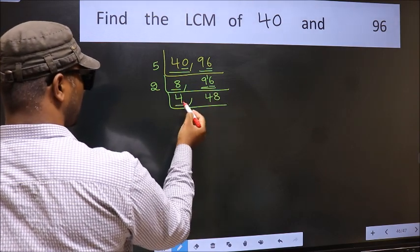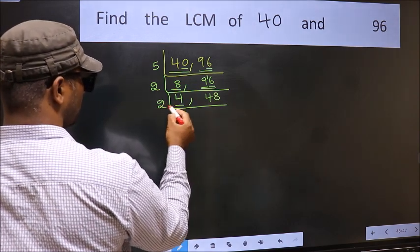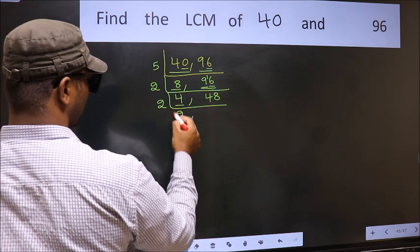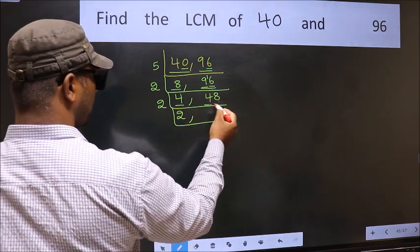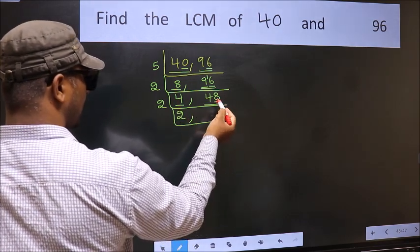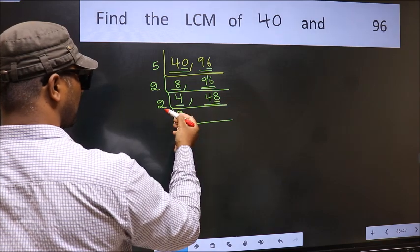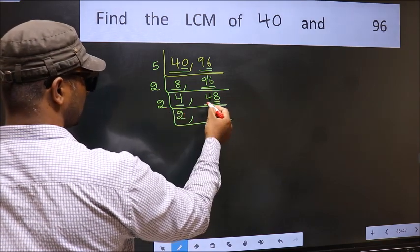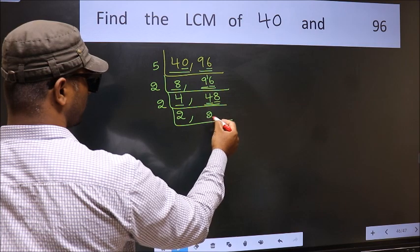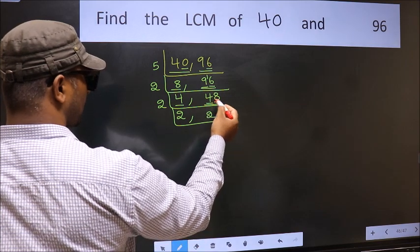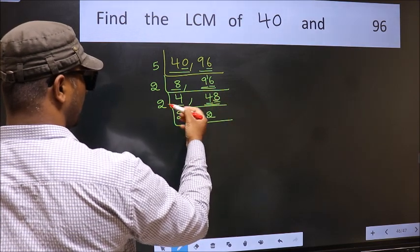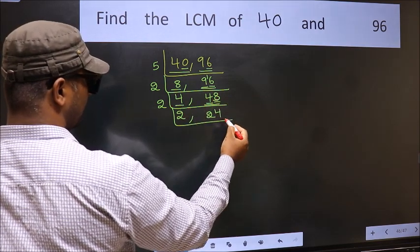Now here we have 4. 4 is 2 times 2. The other number is 48. Last digit 8 is even, so this is divisible by 2. When do we get 4 in the 2 table? 2 times 2 is 4. The other number is 8. When do we get 8 in the 2 table? 2 times 4 is 8.